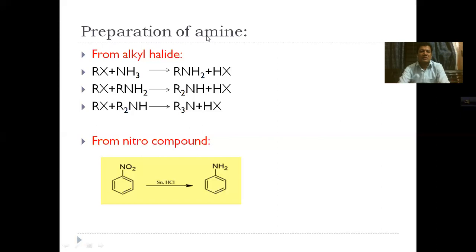Now let's look at the preparation of amines. Amines can be prepared from Alkyl Halide (RX). When Alkyl Halide reacts with ammonia (NH3), it produces hydrogen halide as a by-product. An Alkyl group is added to produce primary amine. When primary amine reacts further with another Alkyl Halide and hydrogen halide is released, secondary amine is produced.